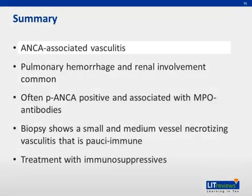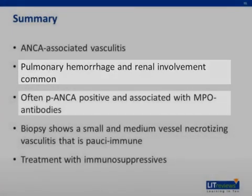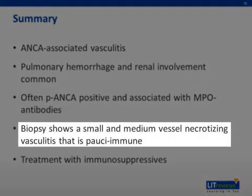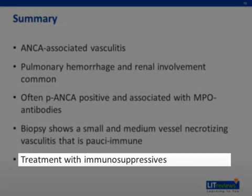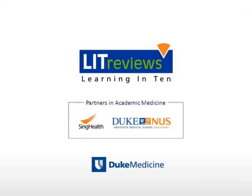To wrap up, MPA is an ANCA-associated vasculitis in which pulmonary hemorrhage and kidney failure are common presentations. MPA is most commonly a P-ANCA associated vasculitis that is confirmed with the presence of anti-MPO antibodies in 80 to 90% of patients. Anti-PR3 antibodies are rarely seen with a P-ANCA pattern. Biopsies reveal a small to medium necrotizing vasculitis that is pauci-immune and without the characteristic granulomas seen in GPA Wegener's. MPA is treated with immunosuppressive medication in an induction regimen followed by maintenance therapy. Thank you.